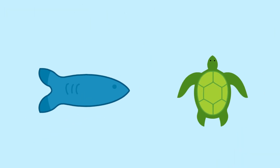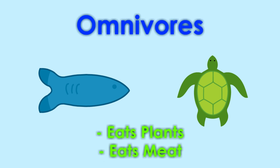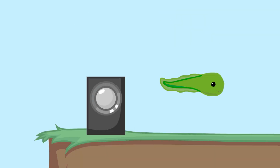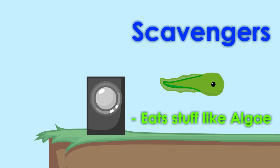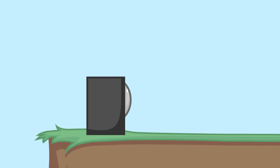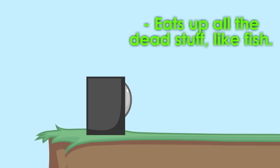But fish, like turtles, eat both plants and animals. They are known as omnivores. Tadpoles are also known as scavengers, which is something that eats stuff like algae. And a decomposer is just some bacteria at the bottom of the pond. It eats up all the dead stuff, like fish.